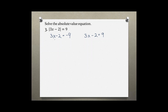Let's solve the left side first. The first step is to add 2 to both sides, which leaves us with 3x equals negative 7. Dividing both sides by 3 gives x equals negative 7 over 3 as the first solution.